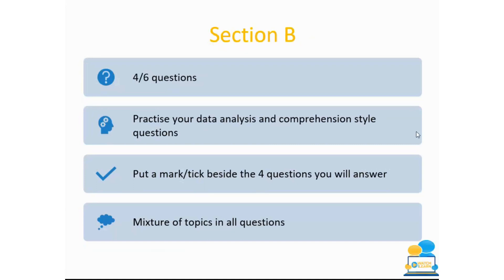Moving on to Section B — these are longer type questions and you need to answer four out of the six questions. It's important to practise your data analysis and comprehension style questions as they typically come up here. In that five minutes at the start, put a mark beside the four questions you'll answer. What we're seeing in Section B is that questions are on a mixture of all topics — there won't be a set question on just grass or dairy or soil. They tend to mix all strands and all overarching themes — we call those synoptic style questions.